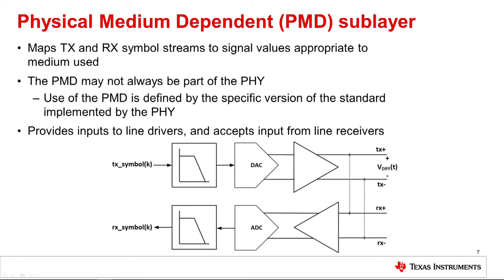The physical medium dependent sublayer, or PMD, if implemented in the PHY, is primarily responsible for converting the TX symbols to the appropriate physical signals used for the network medium. It also converts received path signals to RX symbols. The PMD may not always be part of the PHY; its use is defined by the specific version of the standard implemented. For example, IEEE 802.3bw, also called 100BaseT1, the PMD is not defined because only single twisted pair copper is supported. In this case, the PMA handles the task of conversion between symbols and signaling. This is also true for 1000BaseT. 1000BaseTX defines PMD functionality, but 1000BaseT does not. The PMD is useful for debugging the medium as it is the physical layer responsible for interfacing to the physical media.